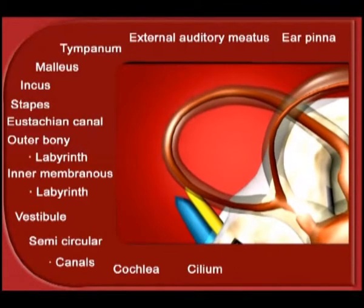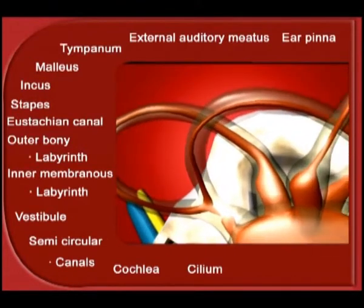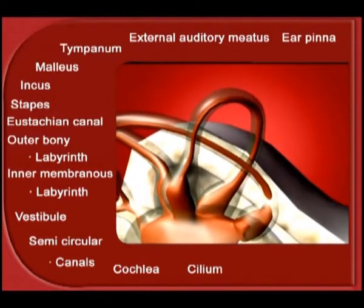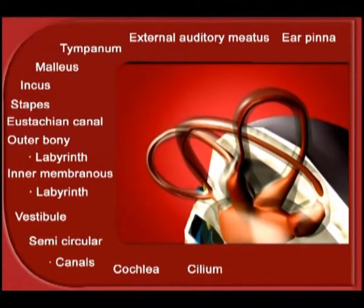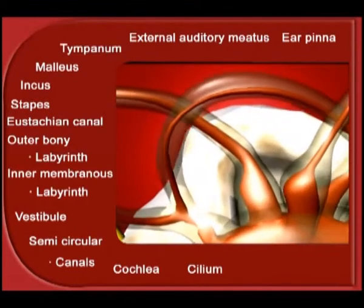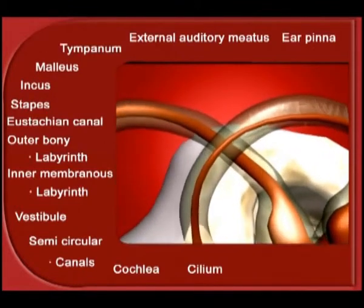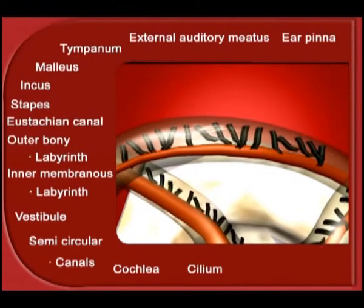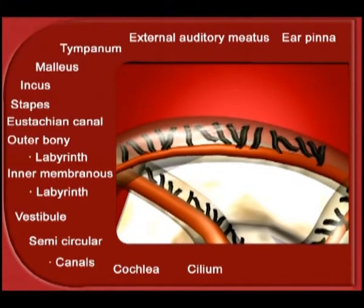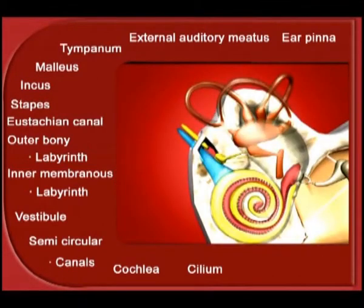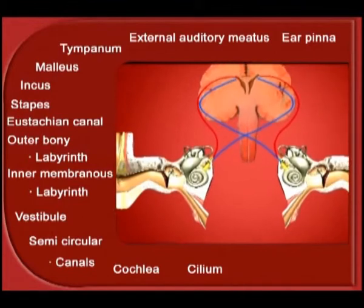The semicircular canals, which are three in number, are present at right angles to each other. Two of them are vertical and one is horizontal. The semicircular canals are also filled with endolymph and have fine tufts of hair-like cilia. Whenever there is a change in the position of the head, the fluid in the semicircular canals moves — it swirls — and this disturbs the position of the cilia, generating an electrical impulse communicated to the brain through the auditory nerve.